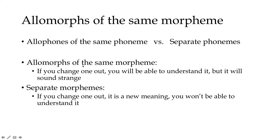We have this relationship with morphemes too. A morpheme is a category of possible pronunciations — a group of possible pronunciations which has a single meaning. These are strings of pronunciation, not single sounds. One morpheme could have more than one allomorph, so if I changed out one allomorph for the other, it wouldn't change the meaning of the word, but it might sound strange.